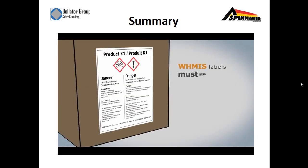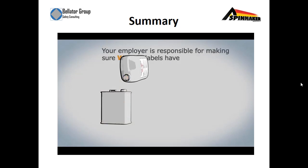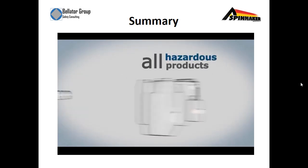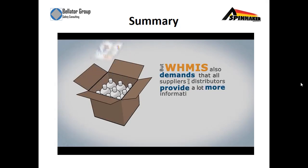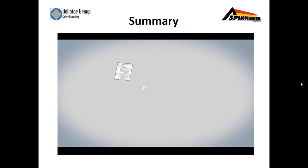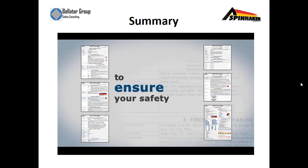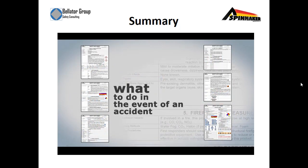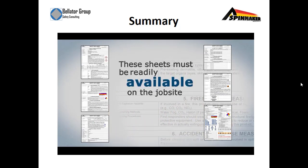WHMIS labels must also include warnings and precautions for safe use. Your employer is responsible for making sure WHMIS labels have been applied to all hazardous products in your workplace. WHMIS also demands that all suppliers and distributors provide a lot more information about their products via safety data sheets or SDS. These sheets provide all the information you need about the product to ensure your safety and what to do in the event of an accident or emergency, and must be readily available on the job site to all workers.